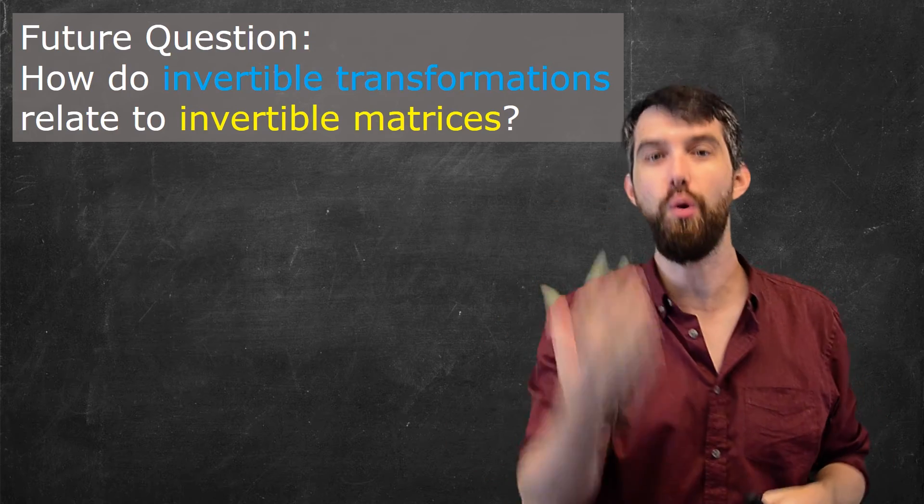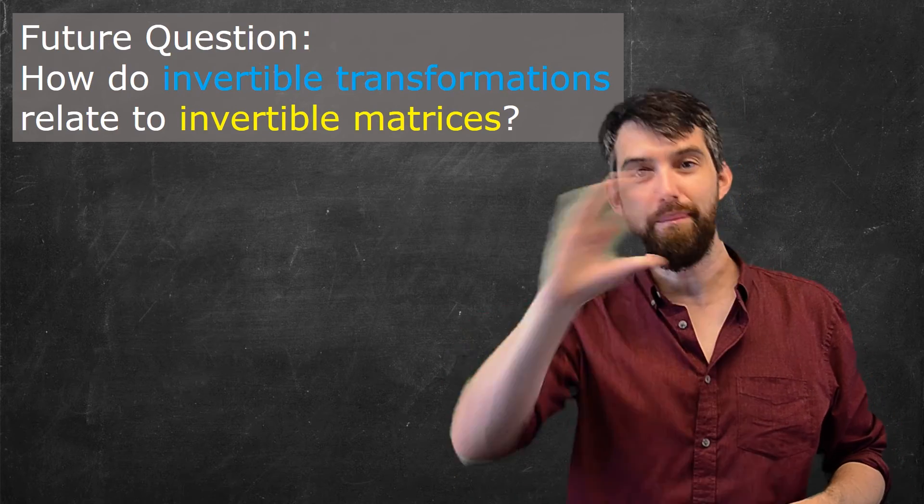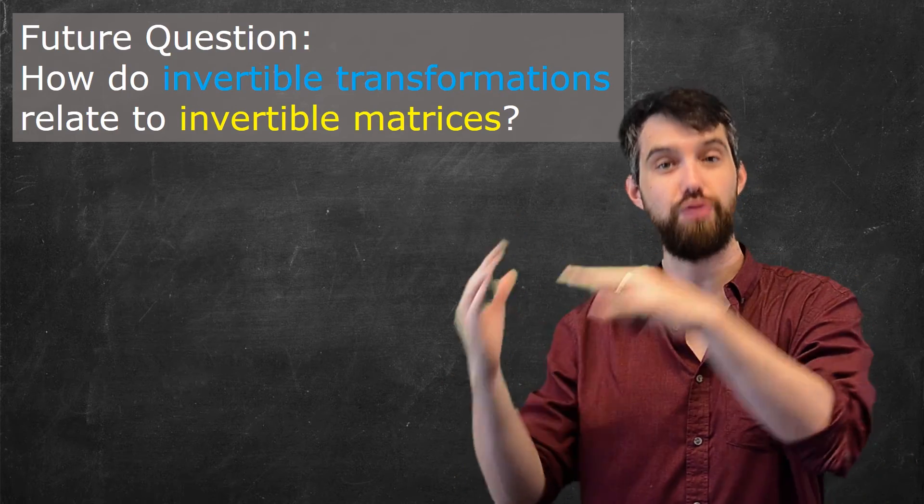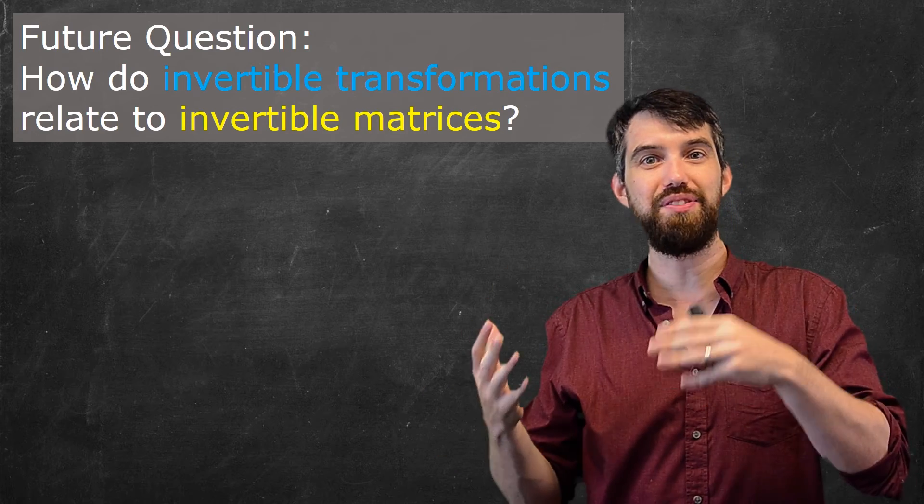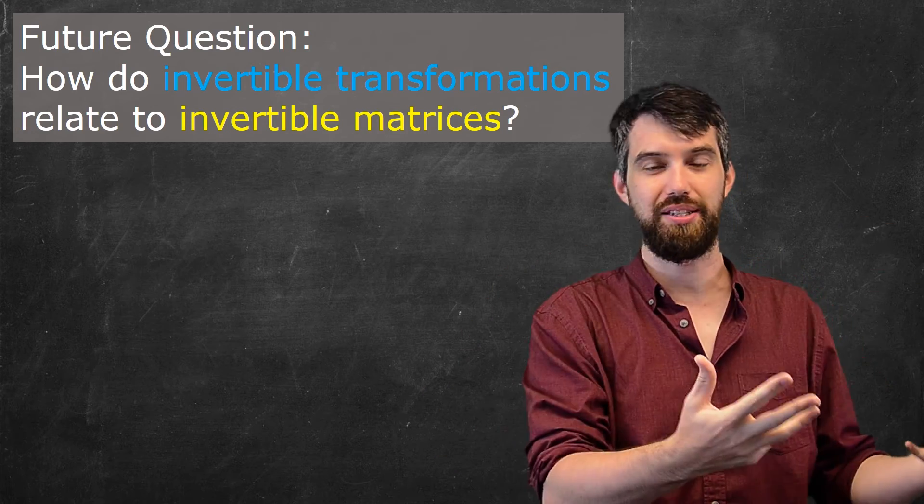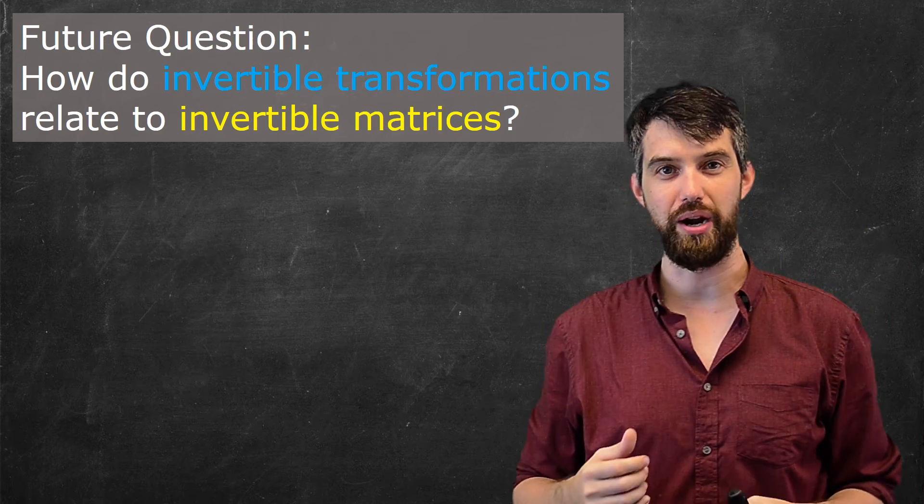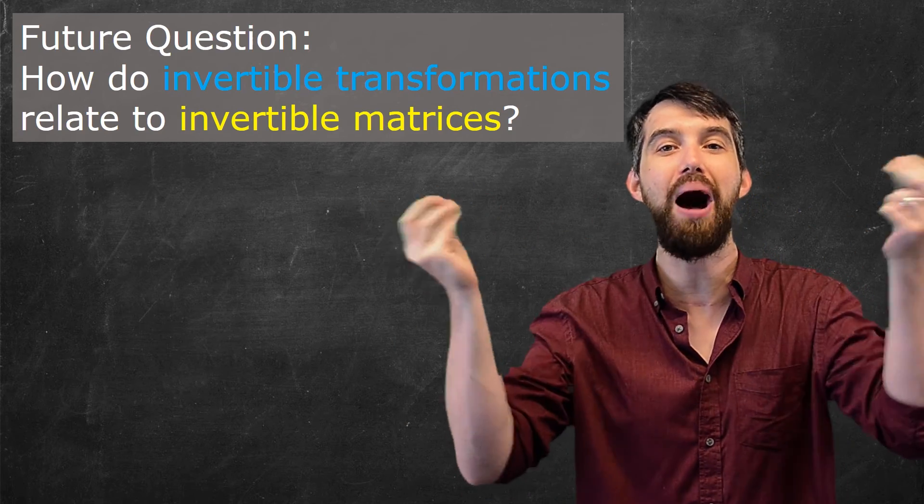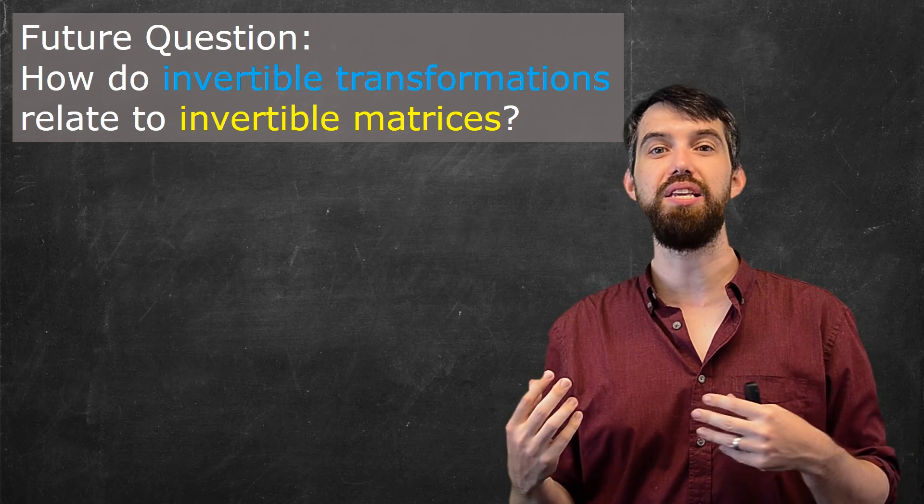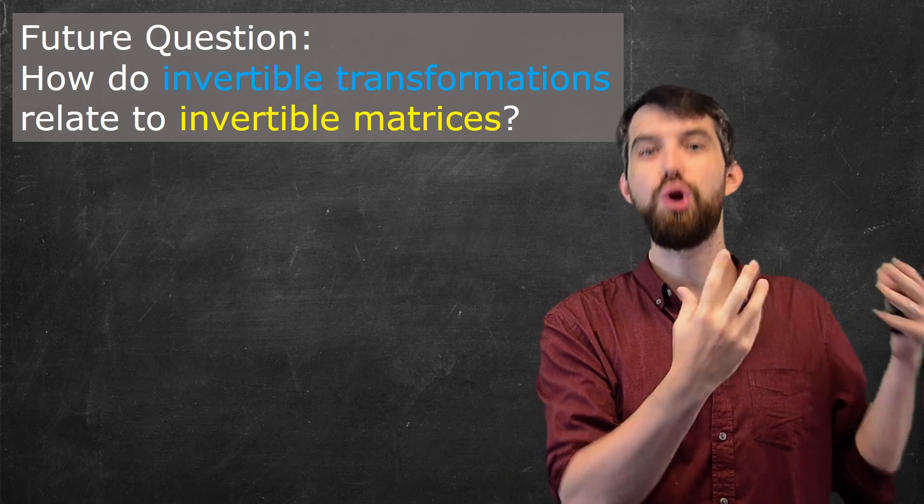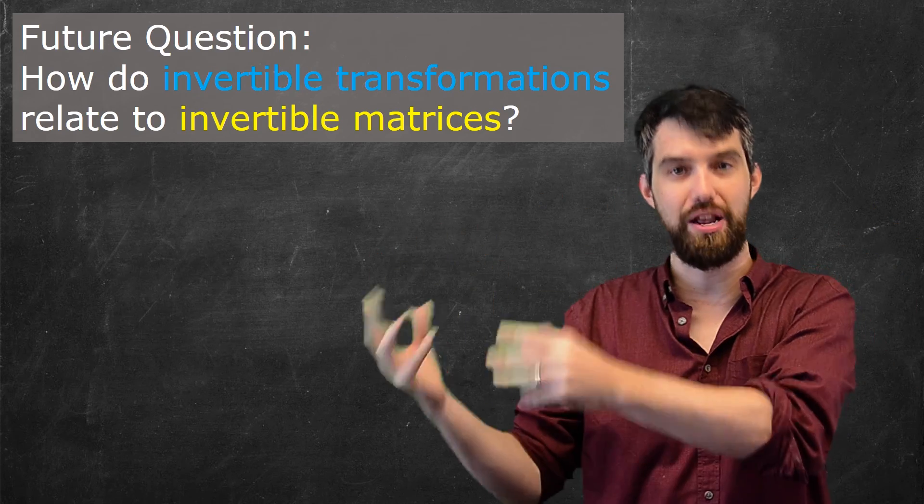Alright, so where are we going with this? We've just studied geometrically the idea of invertible transformations. But previously, we've seen what it meant to have an invertible matrix. An invertible matrix was an algebraic story, and here I'm telling a geometric story. So in the next video, I want to combine these two stories. And indeed, we're going to see that invertible matrices correspond to invertible transformations.